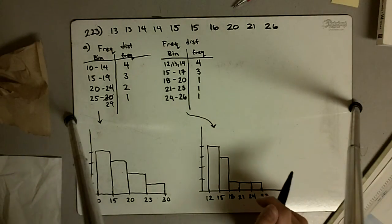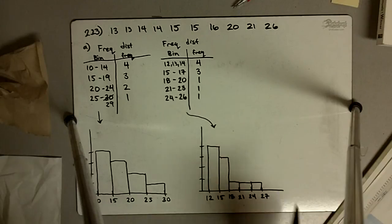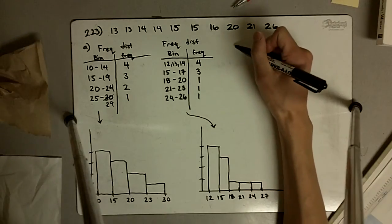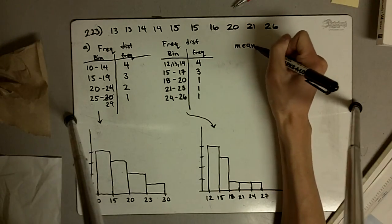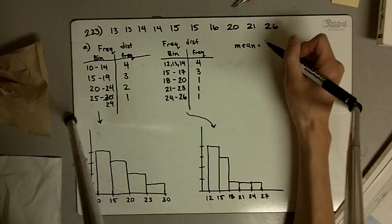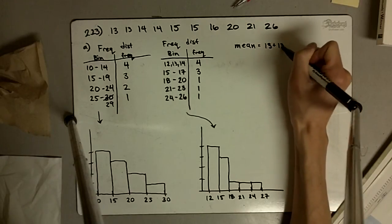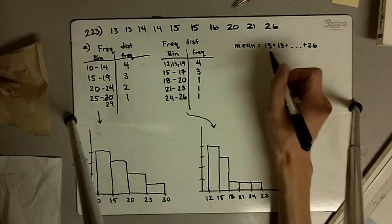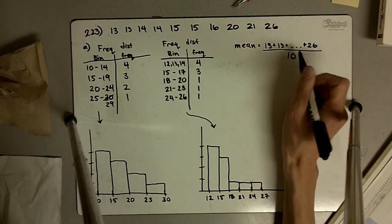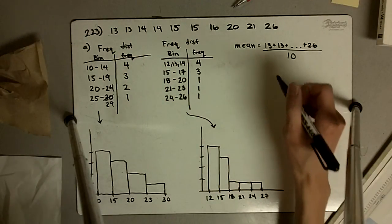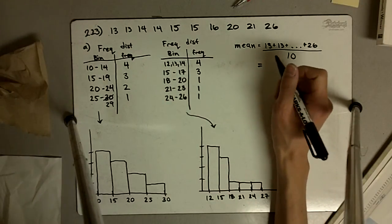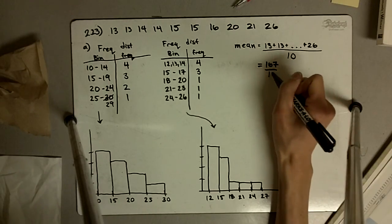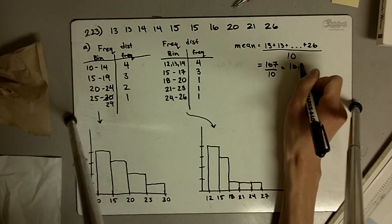Part B asks us to find the mean and the median of the data and to mark their locations on the histogram. The mean is found by simply adding up all the data points and dividing by the number of points we have, which is 10. If you add up all the points, they sum to 167. Divided by 10, we get a mean of 16.7.